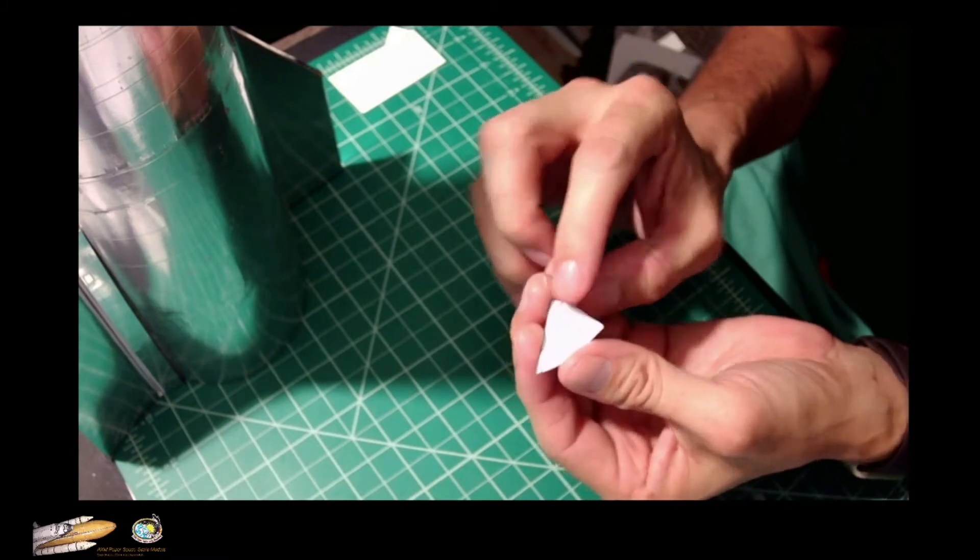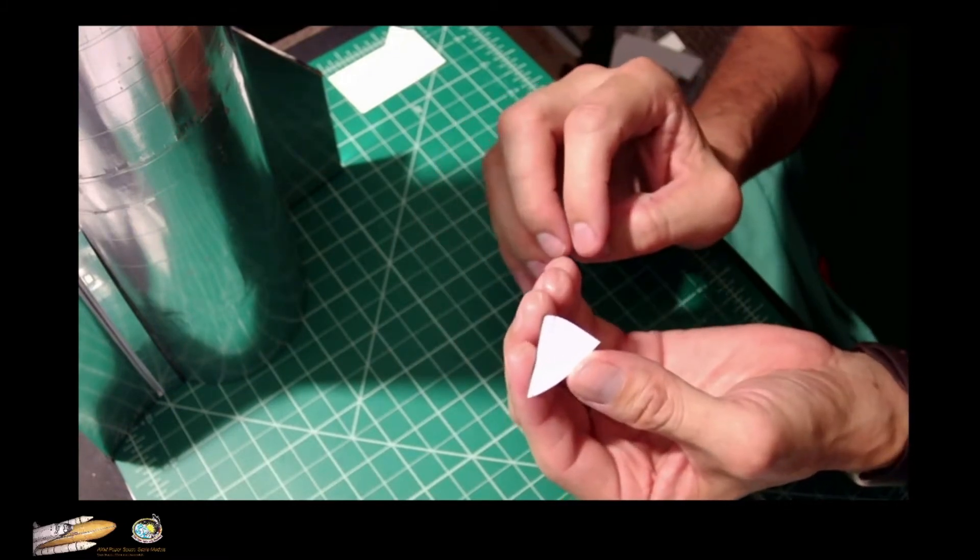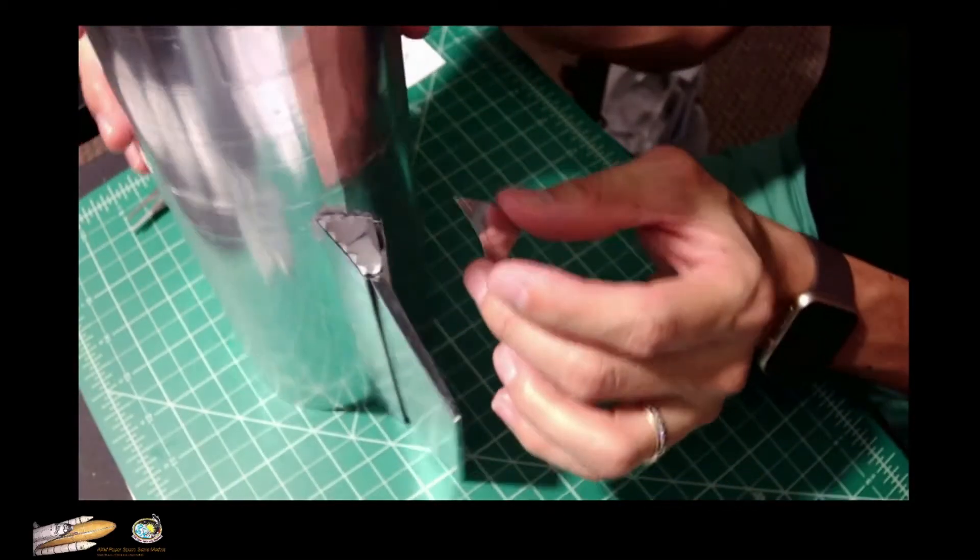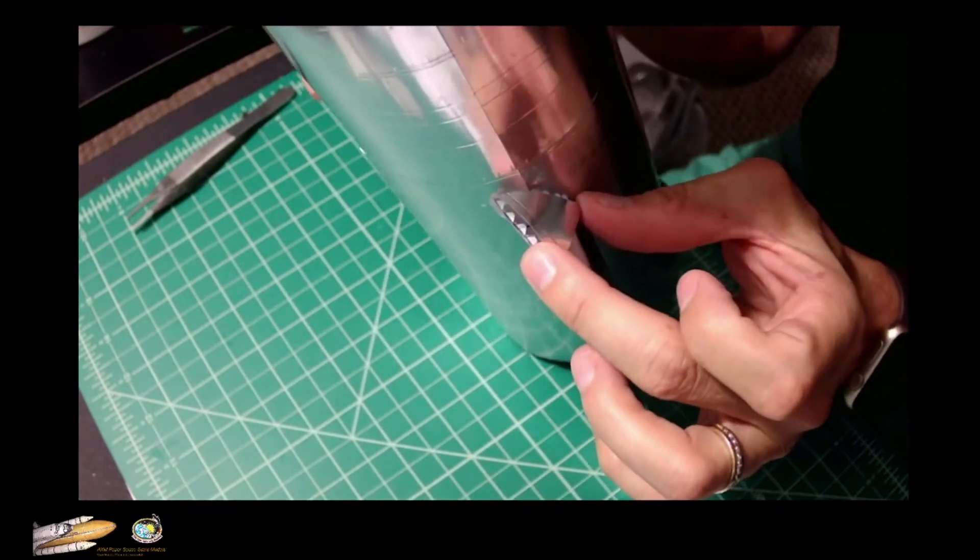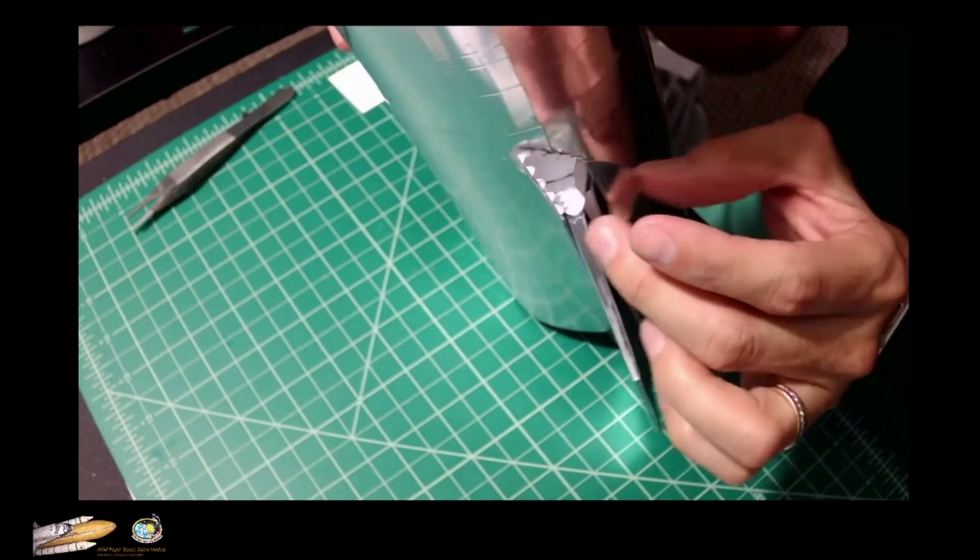We are going to apply regular Elmer's glue on the back, on the edges. It will take some time and you will just try covering all that space. Be sure to cover all those tabs that you can see there.